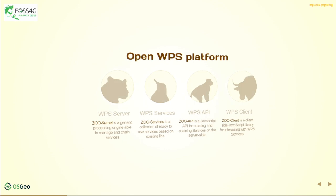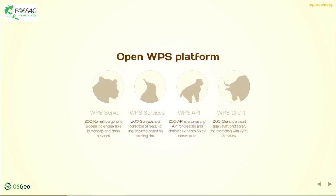Let's go into deep details about the components of this WPS platform. We have the ZOO kernel, which is a generic processing engine. Then we have the WPS service suite, which is a set of services implemented by us or reusing available technologies. Then we have the ZOO API, which is a JavaScript API for creating and chaining services on the server side, reusing existing services to create more complex ones. Then we have the ZOO client, which is a JavaScript library used on the client side to communicate with the server and interact easily with WPS implementations.